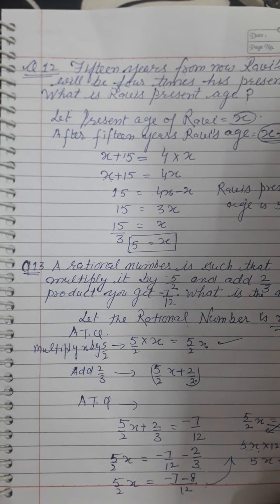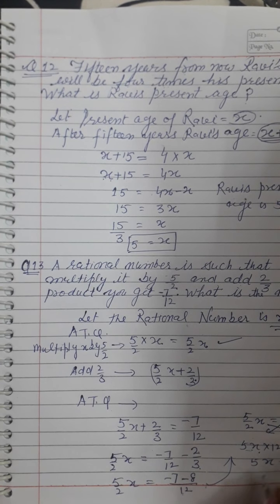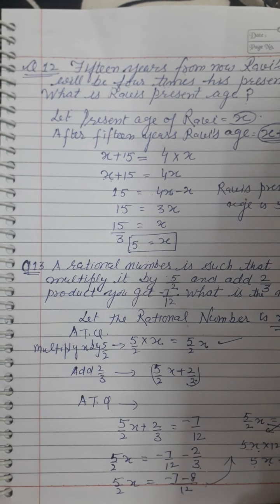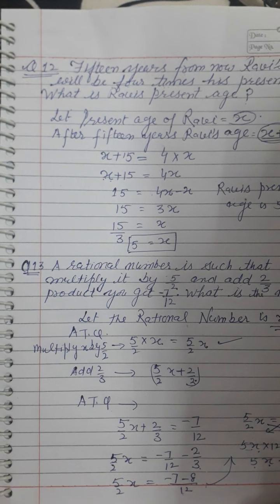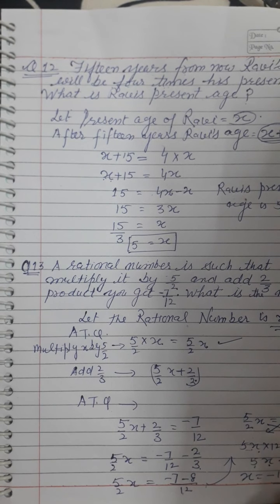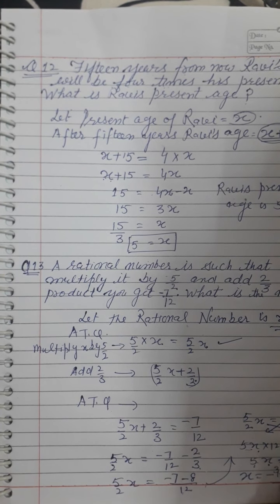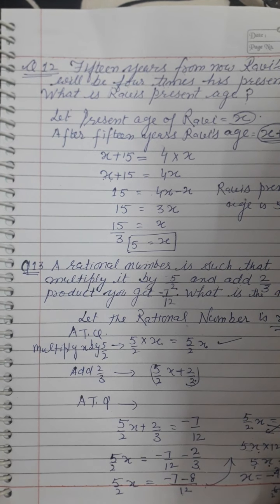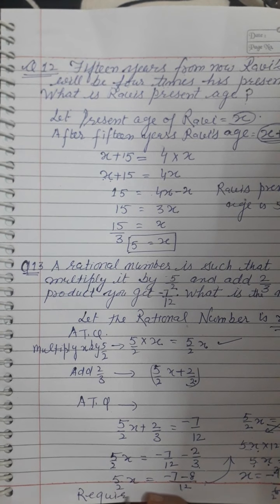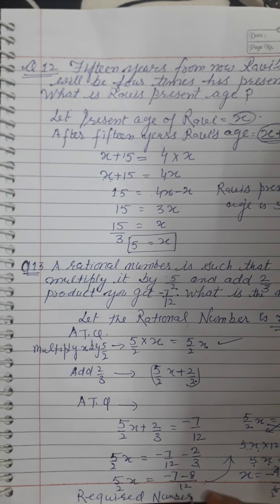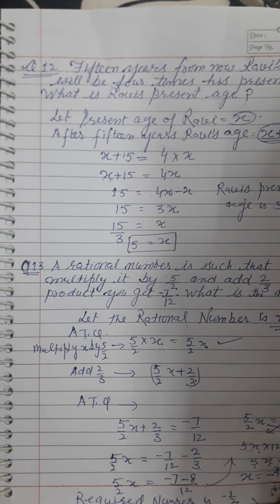Cross-multiplying: 5x times 12 equals minus 15 times 2, so 60x equals minus 30. Simplifying, x equals minus 30 divided by 60. Cancelling common factors, x equals minus 1/2. Therefore the required rational number is minus 1/2. Thank you.